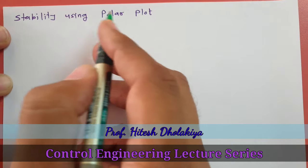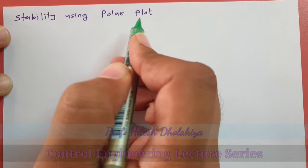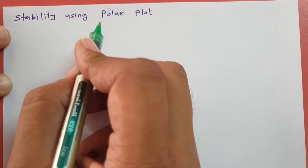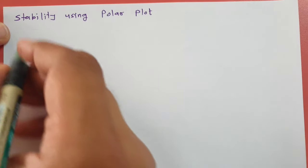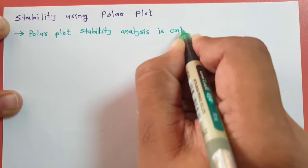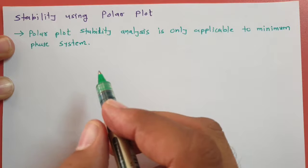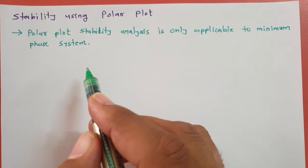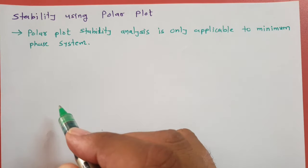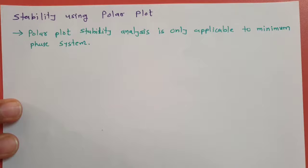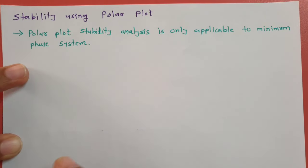One should know that when we check stability by using polar plot, this analysis is applicable only if the given system is a minimum phase system. A minimum phase system is a system which has all the poles and zeros in the left half plane — no roots in the right half plane.